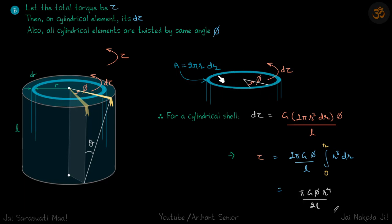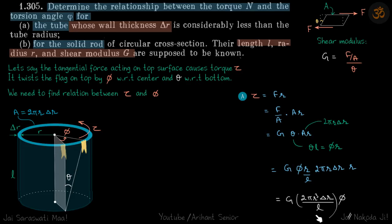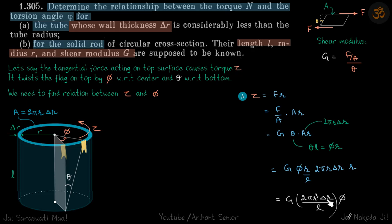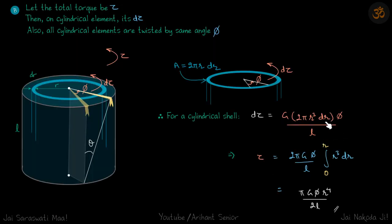Every cylindrical shell element is twisted by the same angle φ. Let the total torque be τ; then each shell contributes dτ. The area on top of a shell at radius r with thickness dr is 2πr·dr. Using the tube formula directly with dr in place of Δr, we get dτ in terms of φ. Integrating r from 0 to R gives the relation between total torque and φ for the solid rod.